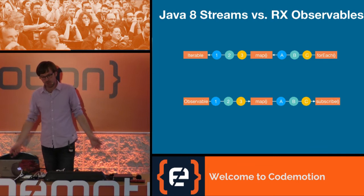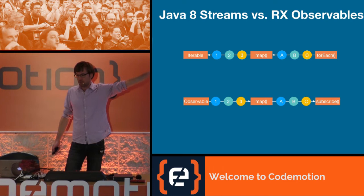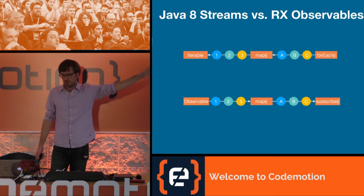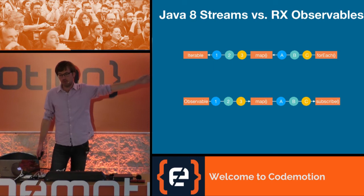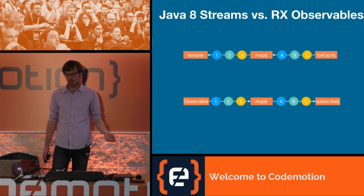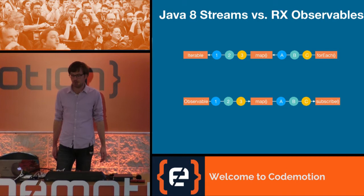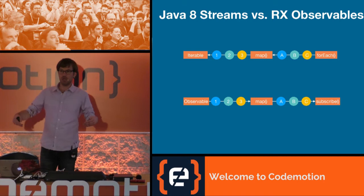For people who like pictures: with an iterable (Streams API), you get all elements immediately — 1, 2, 3 pass through the map method converting to A, B, C, and then arrive at the forEach. With observables, you register a map function, and items arrive over time: 1 is mapped to A, then 2 to B, then 3 to C.